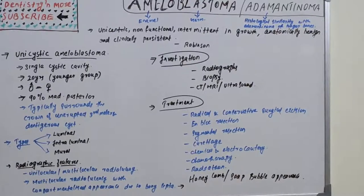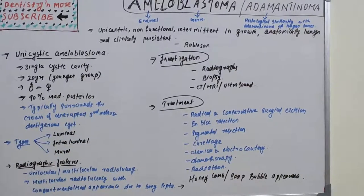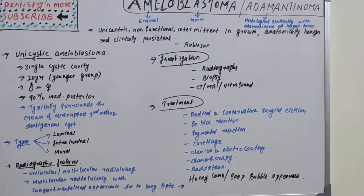Ameloblastoma is a lengthy topic covering: classification (clinical and histological), pathogenesis, clinical features, radiographic features, histological types, unicystic ameloblastoma details, various treatment options, and investigations. It is an odontogenic tumor and one of the most common, alongside CEOT and AOT. These are commonly asked essay questions in dentistry exams.